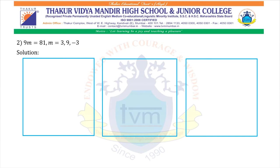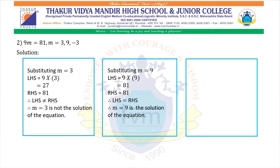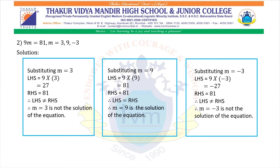Second: 9m equals 81. Substituting m equals 3: LHS equals 9 into 3, that is 27, and RHS is 81, so LHS is not equal to RHS. Therefore m equals 3 is not the solution. Now substituting m equals 9: LHS equals 9 into 9, that is 81, and RHS is also 81, so LHS equals RHS. Therefore m equals 9 is the solution. Next, substituting m equals minus 3: LHS equals 9 into minus 3, that is minus 27. RHS equals 81, so LHS is not equal to RHS. Therefore m equals minus 3 is not the solution.